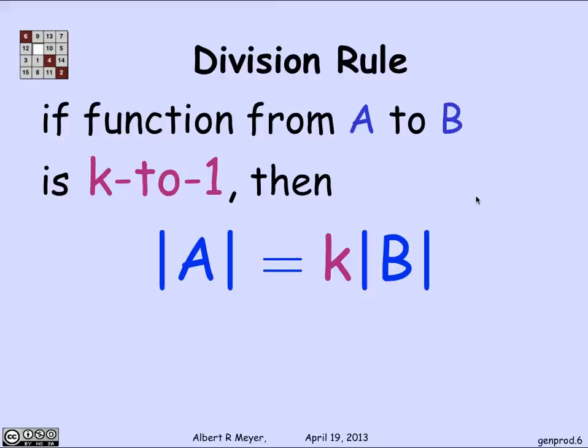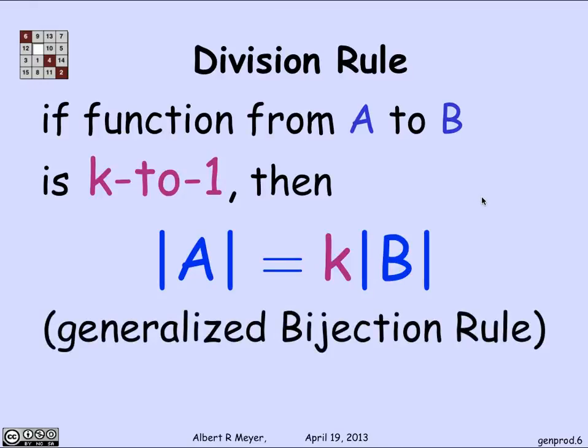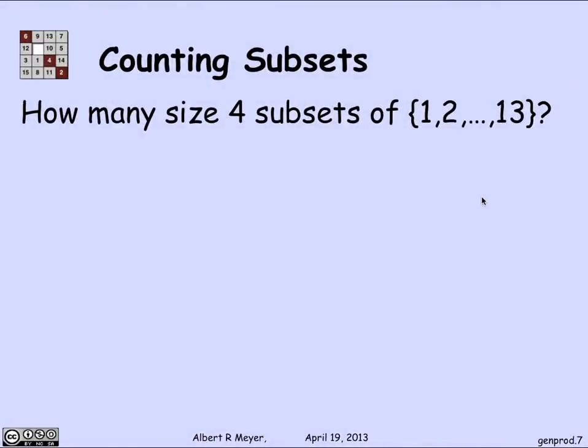And that's the generalized projection rule. Let's apply it in a crucial example that is absolutely basic and we'll be using repeatedly. Suppose that I want to know how many possible subsets of size 4 are there from the numbers 1 through 13. So I have 13 possible numbers that I can choose. I want to pick out any 4 of them and I want to know how many ways are there to do that.